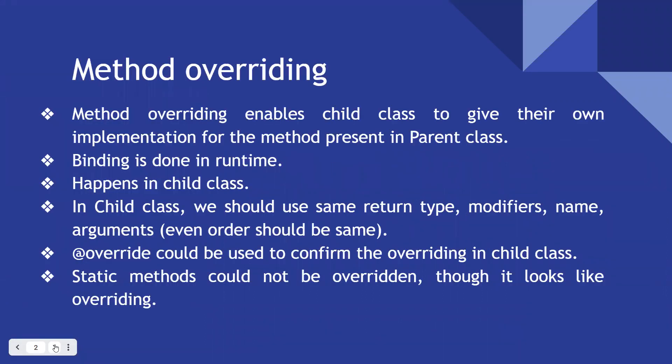The first point: why do we need overriding? Method overriding enables the child class to give its own implementation for a method present in the parent class. When you create a child class that extends the parent class, you have access to all methods in both classes. But if you don't want the parent's implementation and want your own for the child class, you use method overriding.